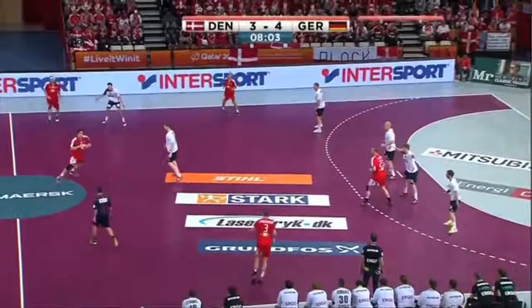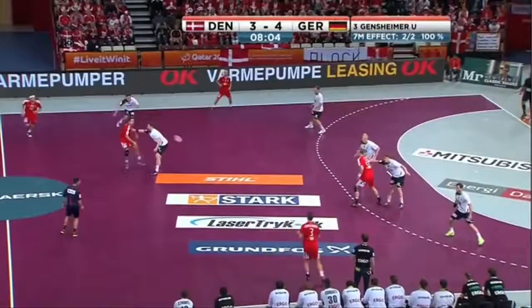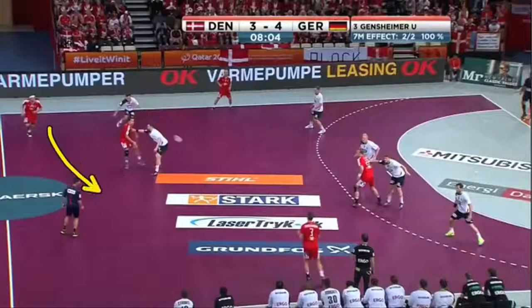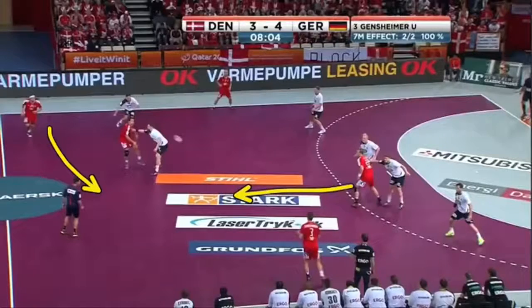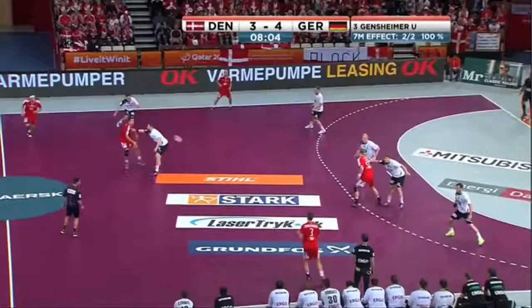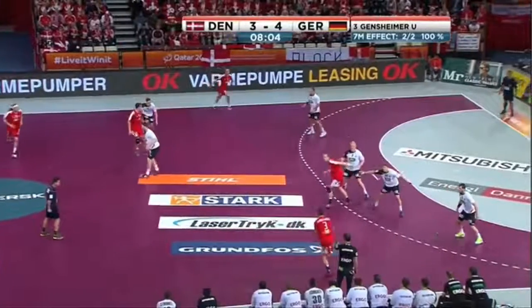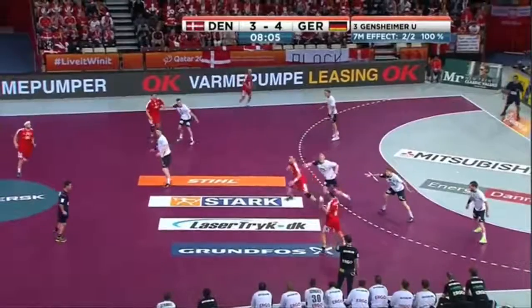Denmark starts the attack against the German Open 4-2 defence with a crossing without ball of centre-back and left-back. In that moment, the pivot is stepping out to set the screen against the Open defender.